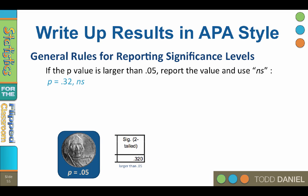If the p-value is larger than 0.05, report the actual number followed by ns, with ns in italics, as is the letter p. For example, p equals 0.32, ns, which of course stands for not significant.